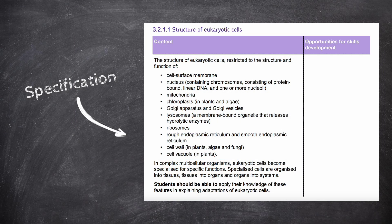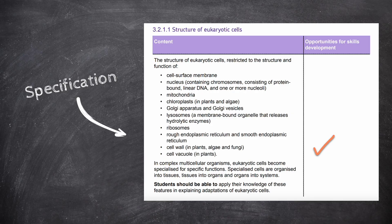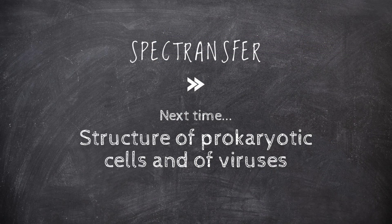Great, that covers the structure of eukaryotic cells. We have covered the structure and function of various components and organelles of eukaryotic cells, including the cell surface membrane, the nucleus, mitochondria, chloroplasts, the Golgi apparatus and Golgi vesicles, lysosomes, ribosomes, the rough and smooth endoplasmic reticula, the cell wall, and the cell vacuole. We have covered specialized cells and how they are organized into tissues, organs, and organ systems, and provided a few examples of specialized cells and their individual features. That's it for now — thanks for watching, please subscribe and comment. Next time we will be covering the structure of prokaryotic cells and viruses.